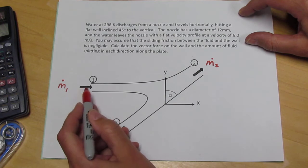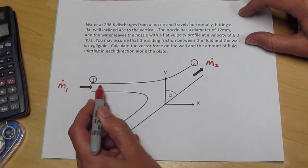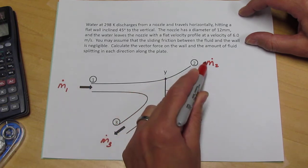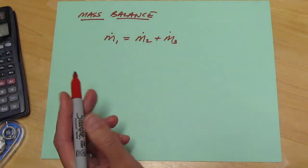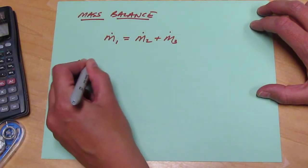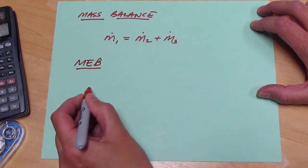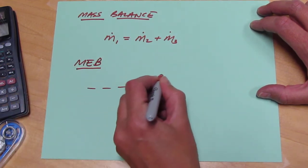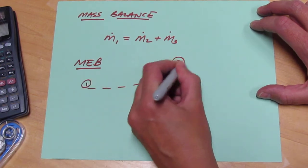So a streamline, for instance, that enters here across boundary one and exits across boundary two can tell us something about the velocity itself. So I'm just going to sketch such a streamline. Here's point one and here's point two.